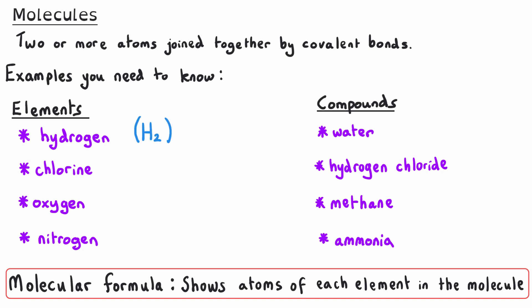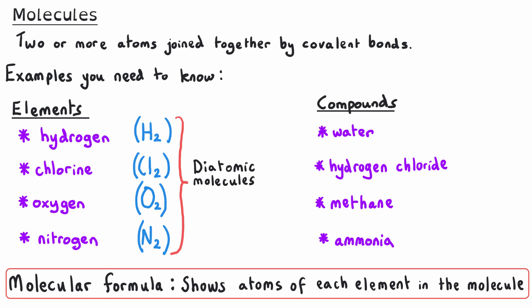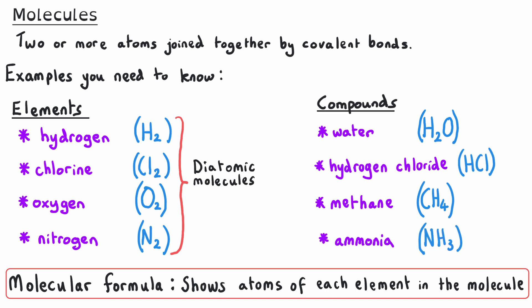Hydrogen is H2, chlorine is Cl2, oxygen is O2, and nitrogen is N2. These four elements are all diatomic molecules — 'di' means two and 'atomic' refers to atoms, so they are molecules made up of two atoms. The compounds are more complicated. Water is H2O, made up of two atoms of hydrogen bonded to one atom of oxygen. Hydrogen chloride is HCl. Methane is CH4, meaning one atom of carbon and four atoms of hydrogen. And ammonia is NH3 — one atom of nitrogen bonded to three atoms of hydrogen.